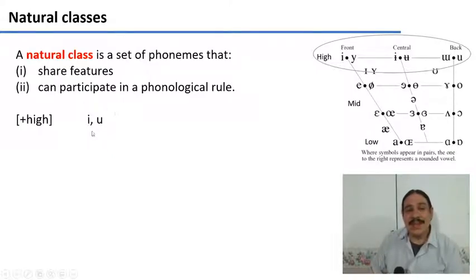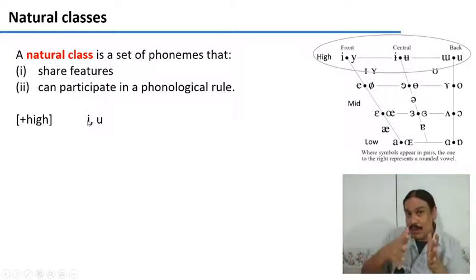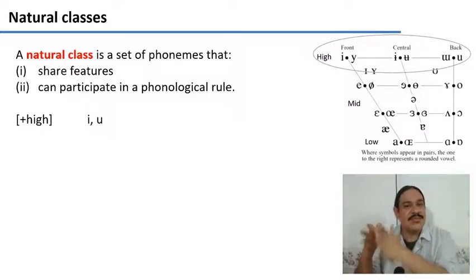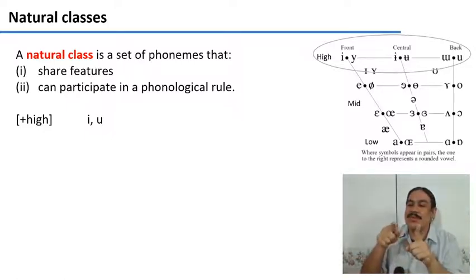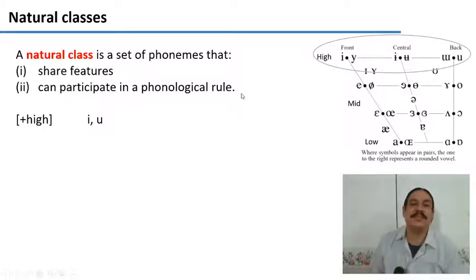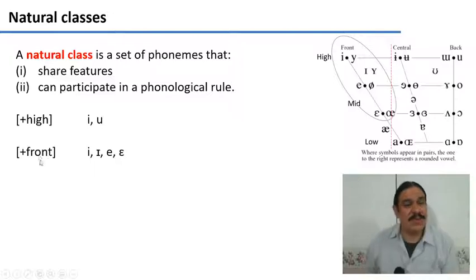What's interesting about natural classes is that, as we will see as we move on through the week, phonological rules are usually written in terms of natural classes. For example, you could have that a sound is affected if it is next to a high vowel or if it is next to a front vowel. For instance, these four sounds could form a natural class where what they have in common is the feature [+front].